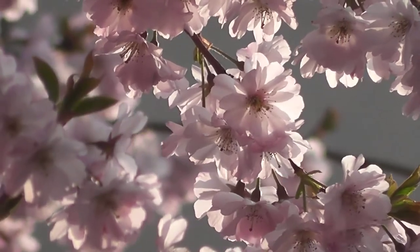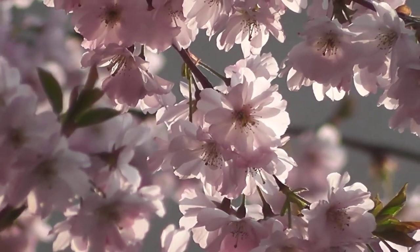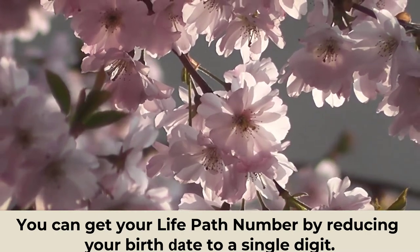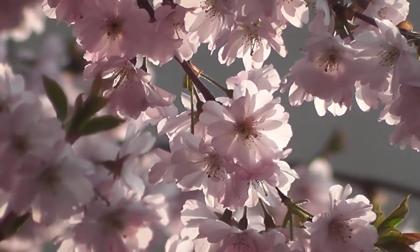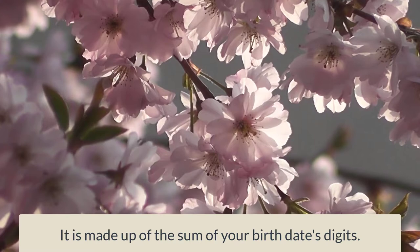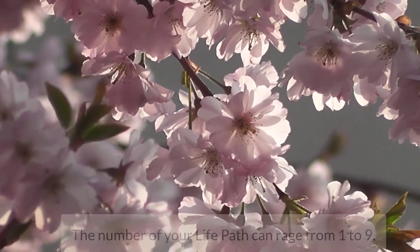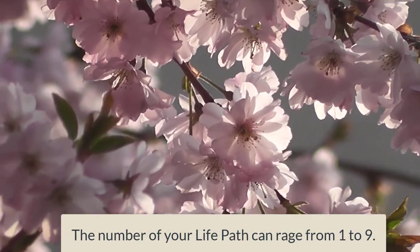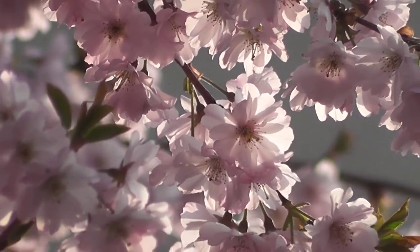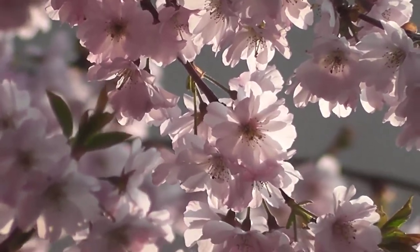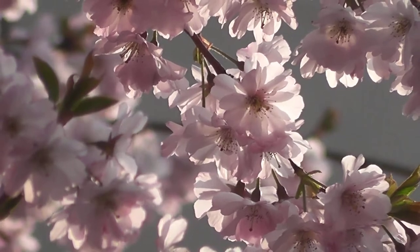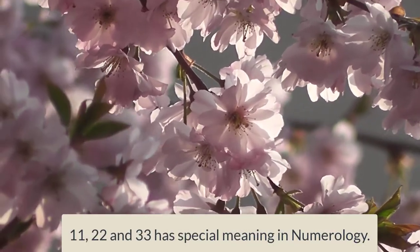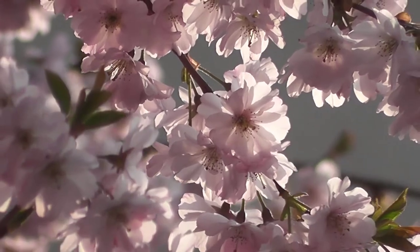Calculate life path number. Using easy math, you can get your life path number by reducing your birth date to a single digit or a master number. It is made up of the sum of your birth date's digits. The number of your life path can range from 1 to 9. Also included are master numbers 11, 22, and 33. These have special meanings in numerology — keep them unchanged.